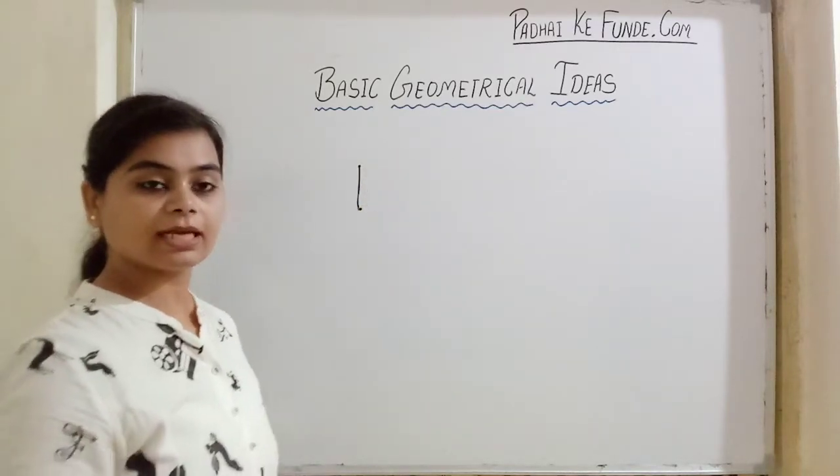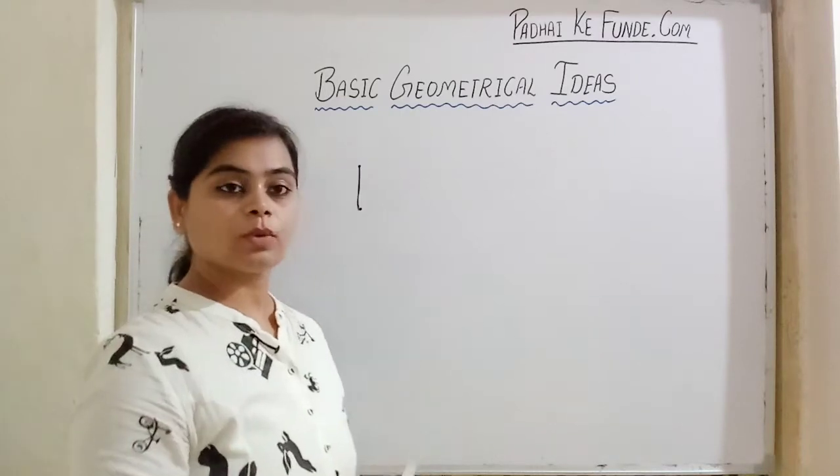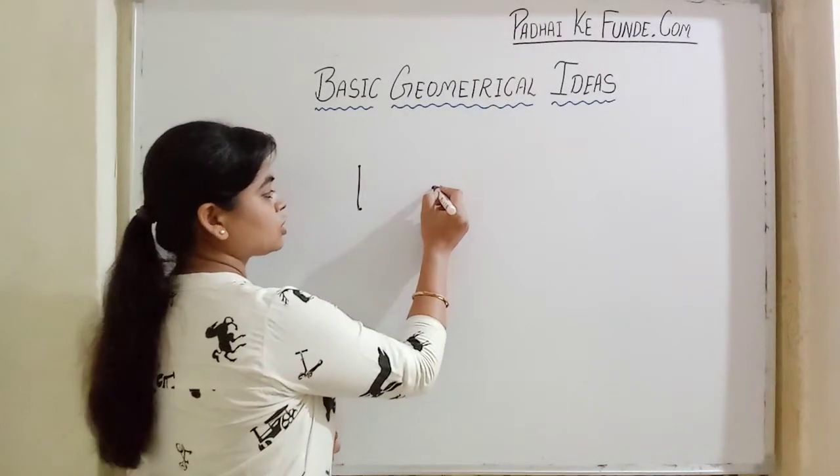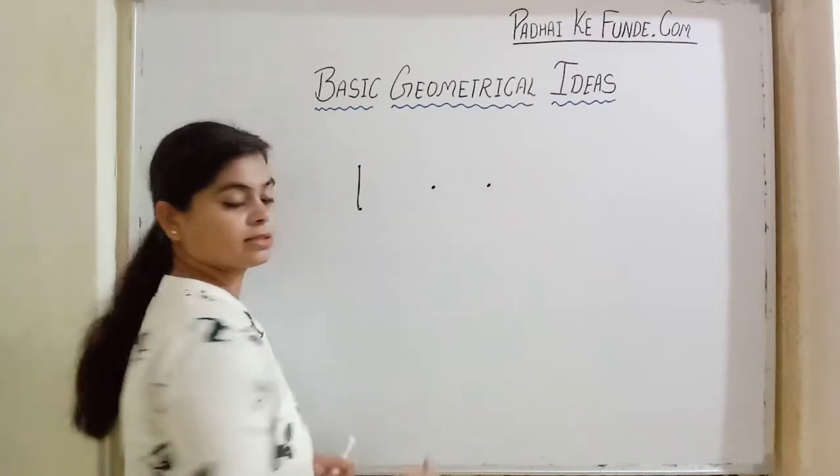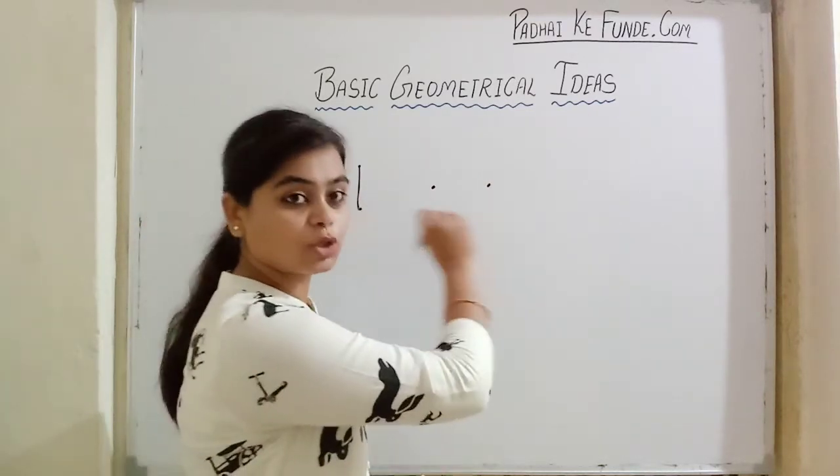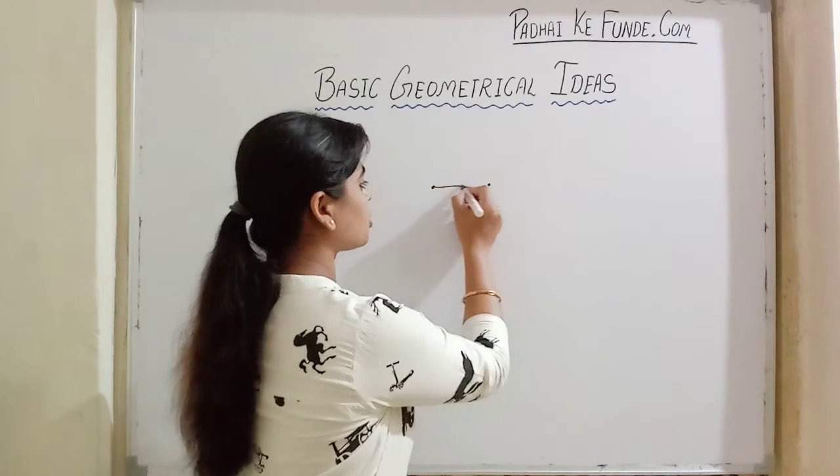This is a standing line. When she wanted you to make a sleeping line, then she used to give you dots like this and say join the dots. So you used to join it like this.